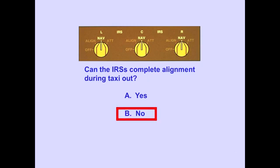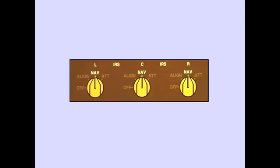Answer B is correct. During alignment, it is important that the airplane remain stationary. This ensures that the Earth's rotation is the only movement detected by the IRS.